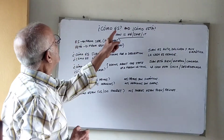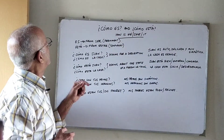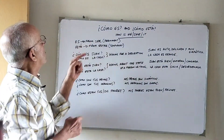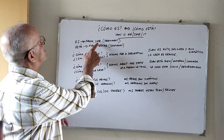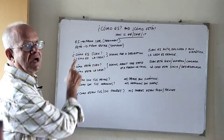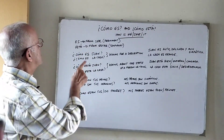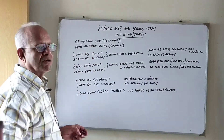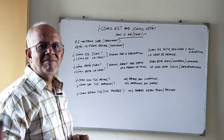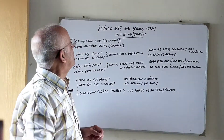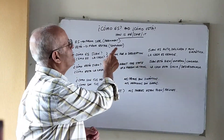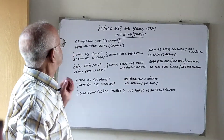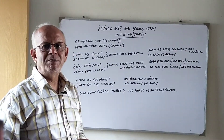Now where do these words 'es' and 'está' come from? 'Es' is the third person conjugation of the verb Ser, which refers to permanent situations. And 'está' is the third person conjugation of the verb Estar, which refers to temporary situations. So both these verbs mean 'to be.'